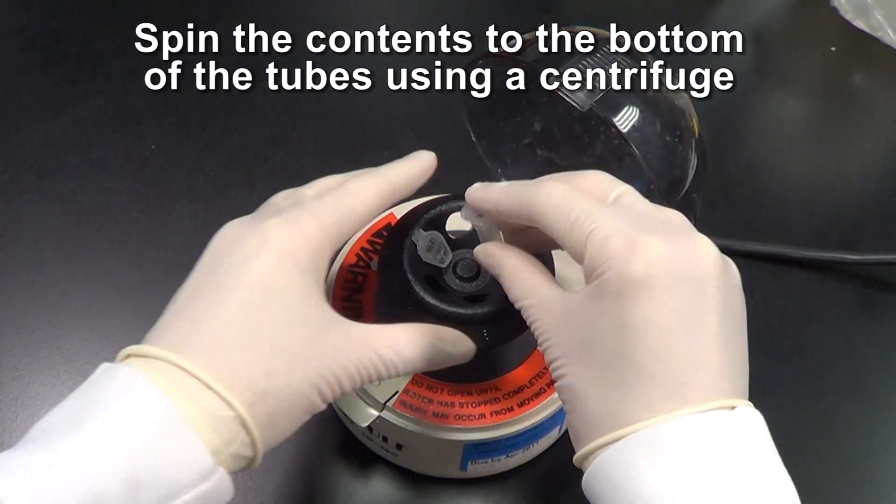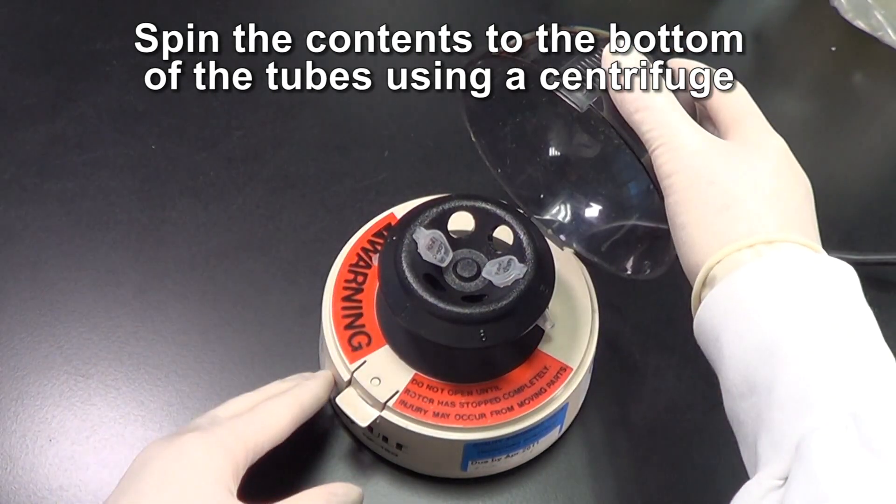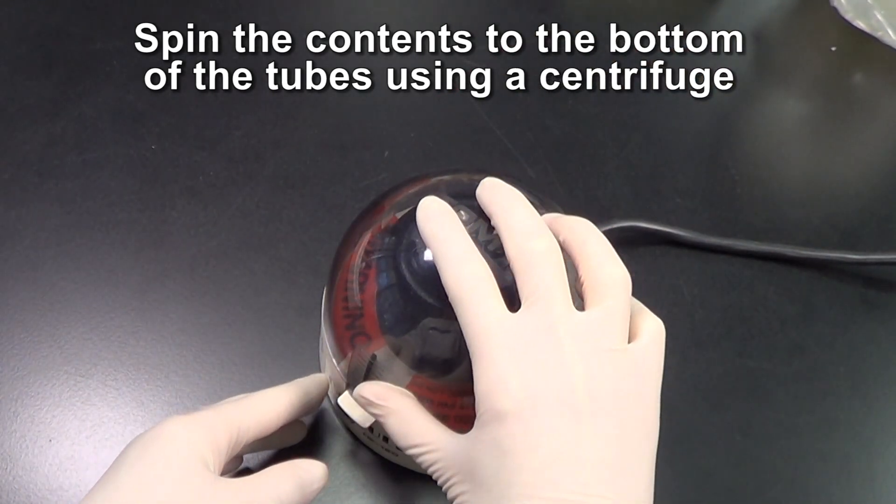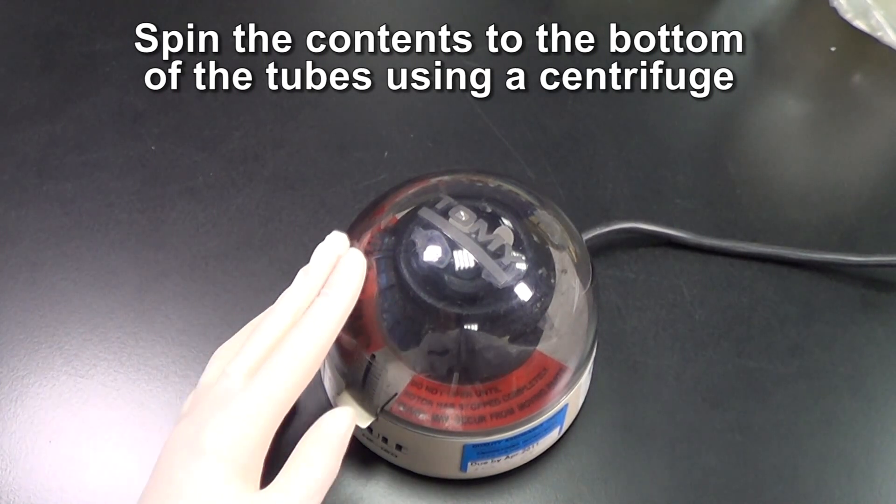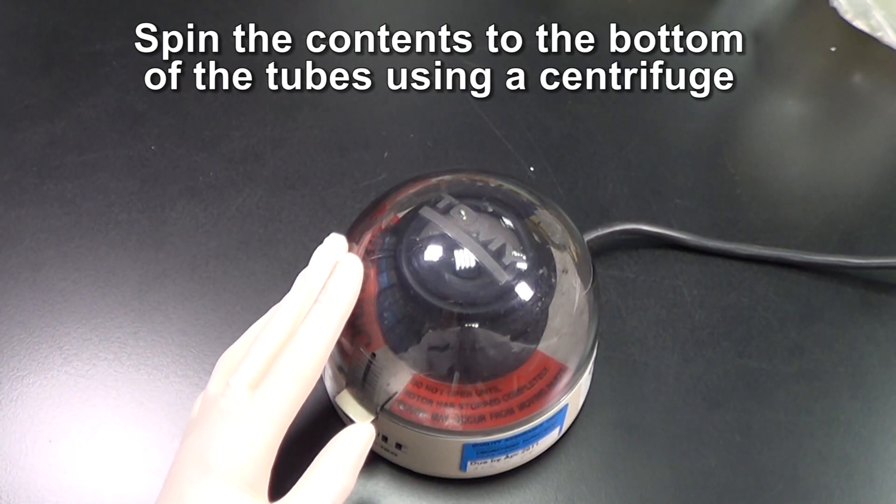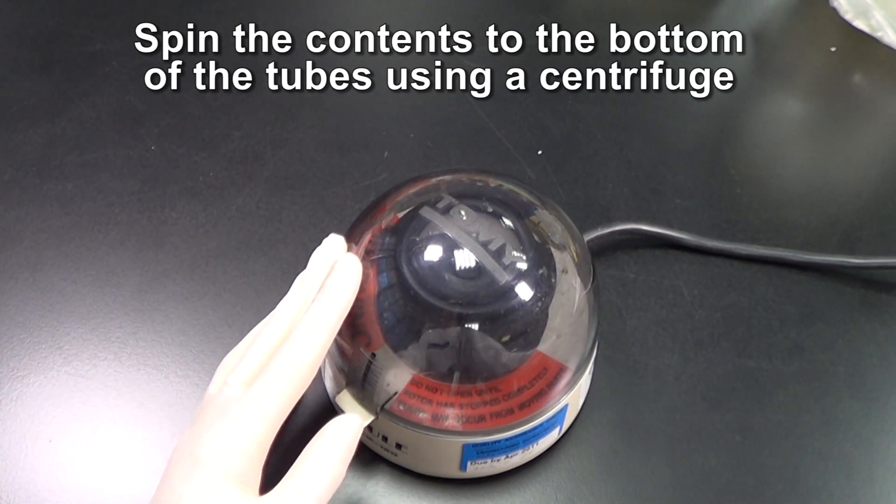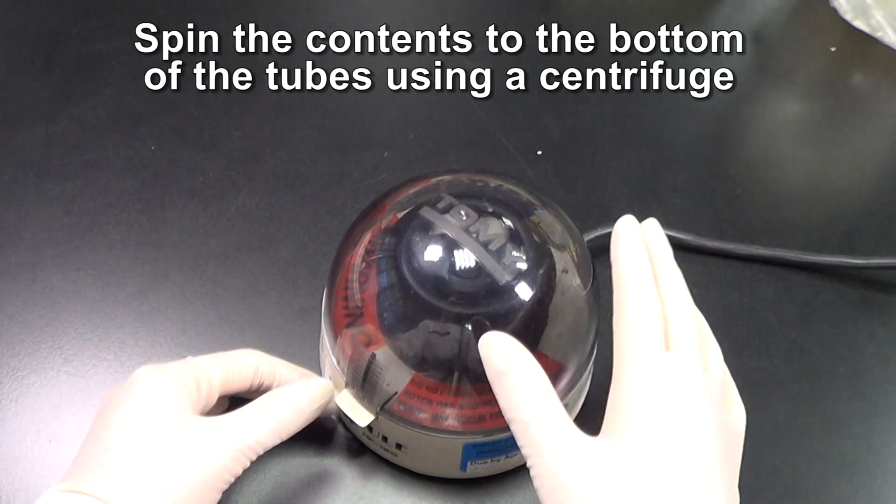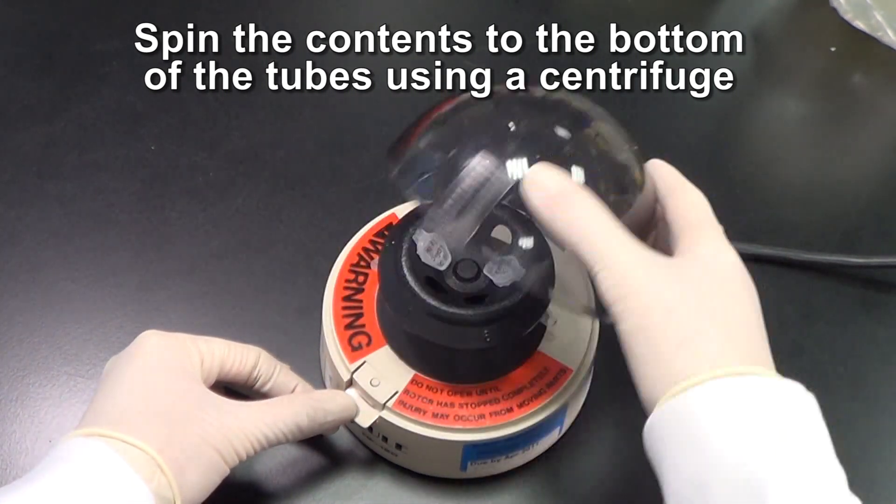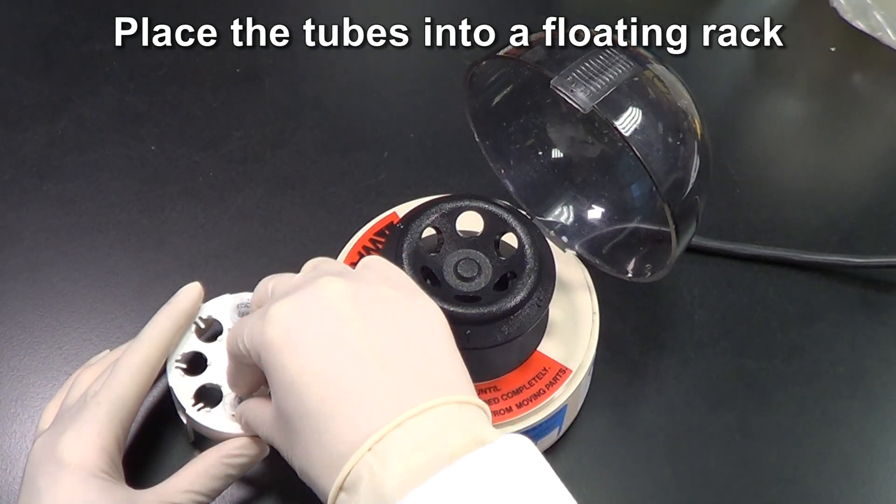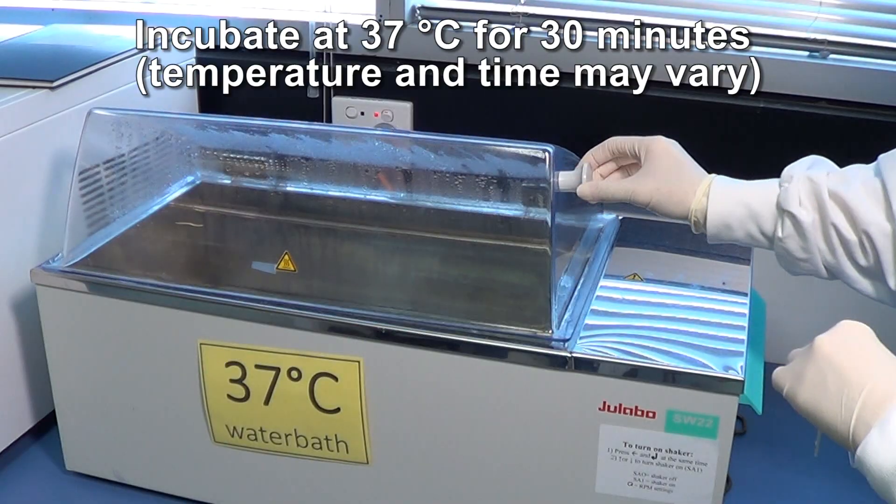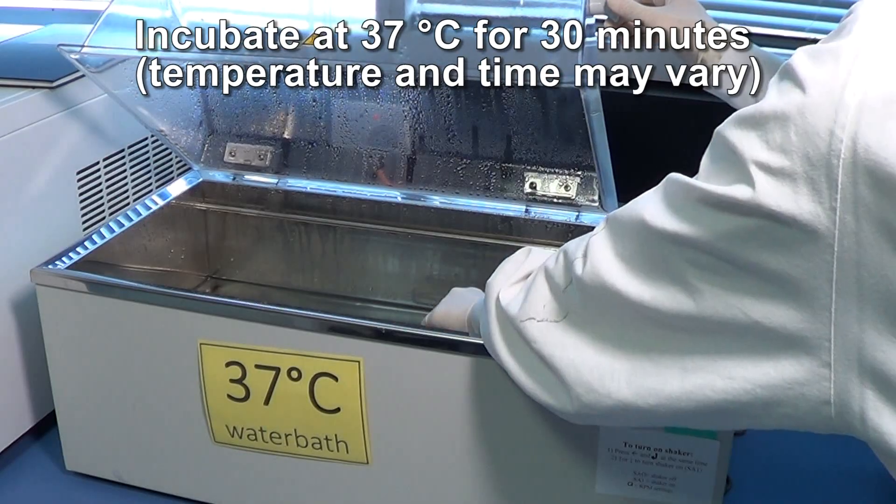Collect the contents into the bottom of the tube by centrifugation. Make sure the centrifuge is balanced. Incubate the tubes at 37 degrees for 30 minutes.